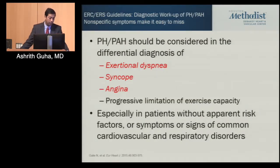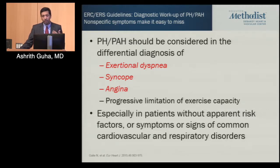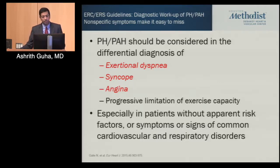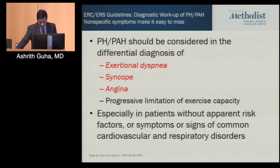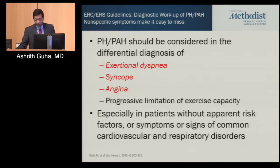When should you consider pulmonary hypertension in a differential diagnosis? Traditionally PAH was thought of as a young woman's disease, but the epidemiology has really changed over the last ten years. We're seeing it in older patients with other comorbidities — essential hypertension, diabetes — but also diseases associated with PAH like connective tissue disease or HIV. Consider PAH when someone presents with exertional dyspnea, syncope, or angina, especially when the exertional dyspnea is out of proportion to their coexisting disease.